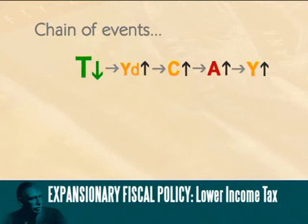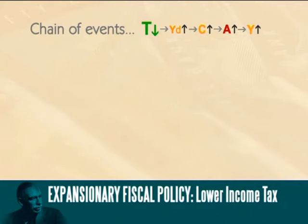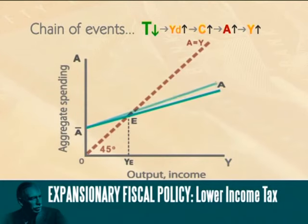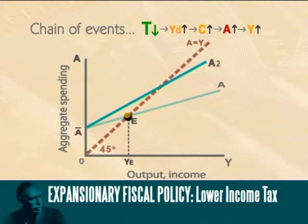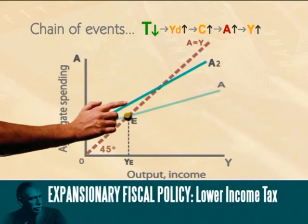In our graph, taxation changes the slope of the total spending curve. A lower income tax results in a steeper slope, reflecting that households now spend a greater proportion of their income on consumption. At the original level of income and output, Y-E, households now spend a larger proportion of income, namely C multiplied by 1 minus T. Total spending exceeds output and inventories decline.